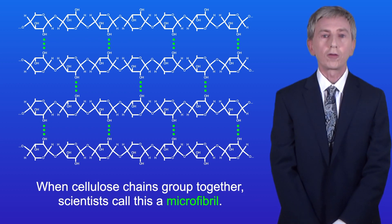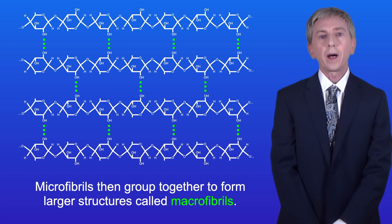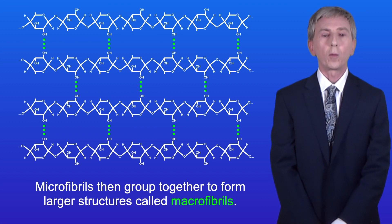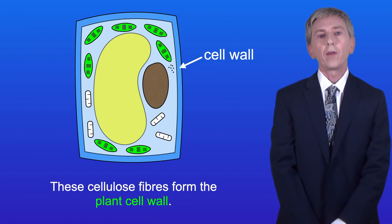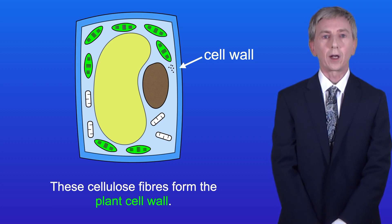When cellulose chains group together, scientists call this a microfibril. Microfibrils then group together to form larger structures called macrofibrils. And finally, macrofibrils group together to form a cellulose fibre, and these cellulose fibres form the plant cell wall.